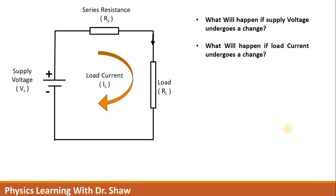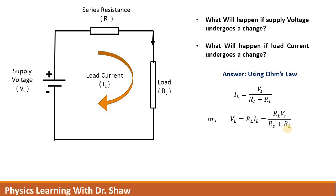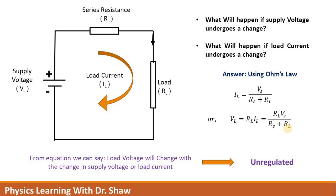The answer is very simple. If you know Ohm's law, the load current can be written as Vs divided by (Rs + Rl). As a result you can easily calculate the voltage drop across Rl, which you can obtain by multiplying Rl with Il. If we say that this load voltage is the output voltage, then if we change load current or supply voltage, the load voltage will change.